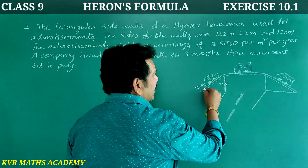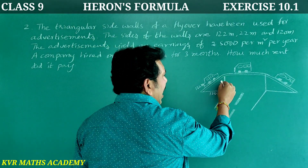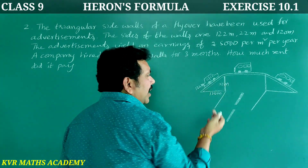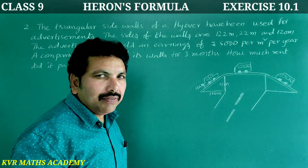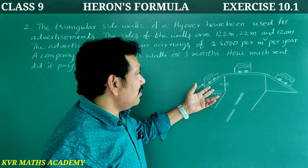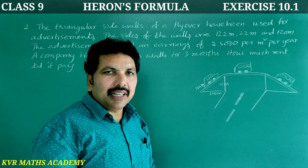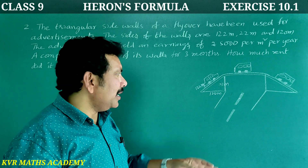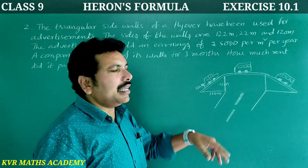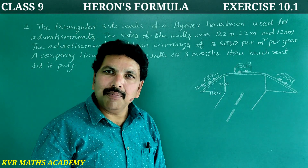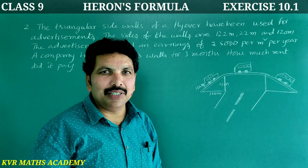To solve this, we first find the area of the triangle using Heron's formula. After finding the area, we can calculate the rent at rupees 5,000 per meter square per year for 3 months.